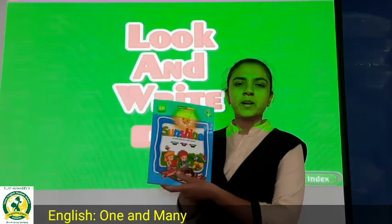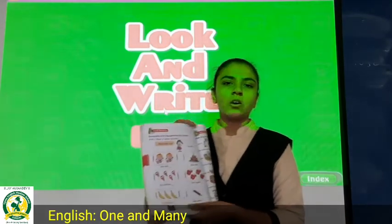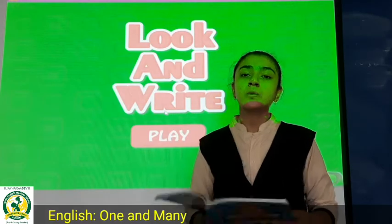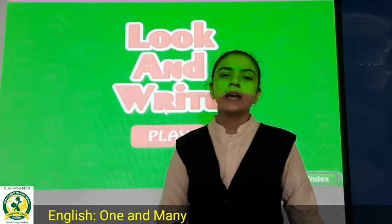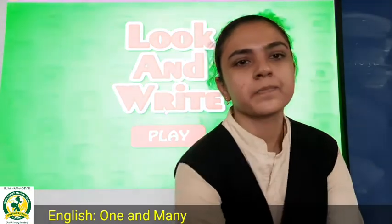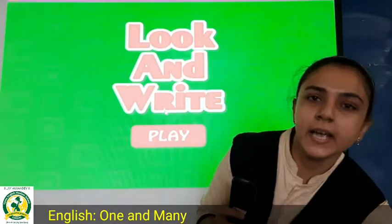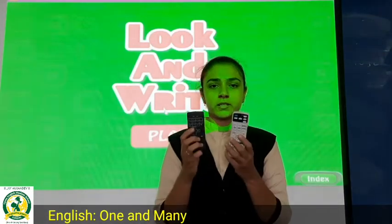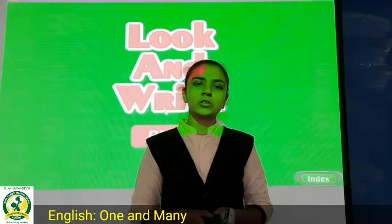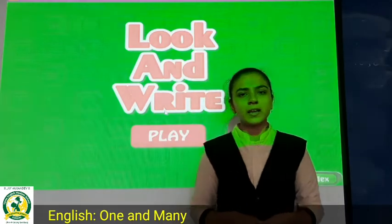Take out your Sunshine book and open page number 96. We are going to do 'one and many.' I am going to explain what it means. See, this is a remote — it is one only. But if there are 2 remotes, if things are more, we will add S at the end.